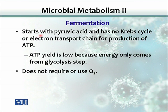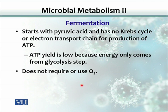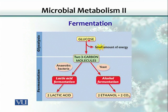During fermentation, the process starts with pyruvic acid from the glycolysis pathway. There is no Krebs cycle and no electron transport chain. The ATP yield is only what is gained during glycolysis. Fermentation does not require or use oxygen — it happens without the presence of oxygen. Glucose gets converted into three-carbon pyruvic acid molecules, which are then converted into end products such as lactic acid or ethanol — two common examples.